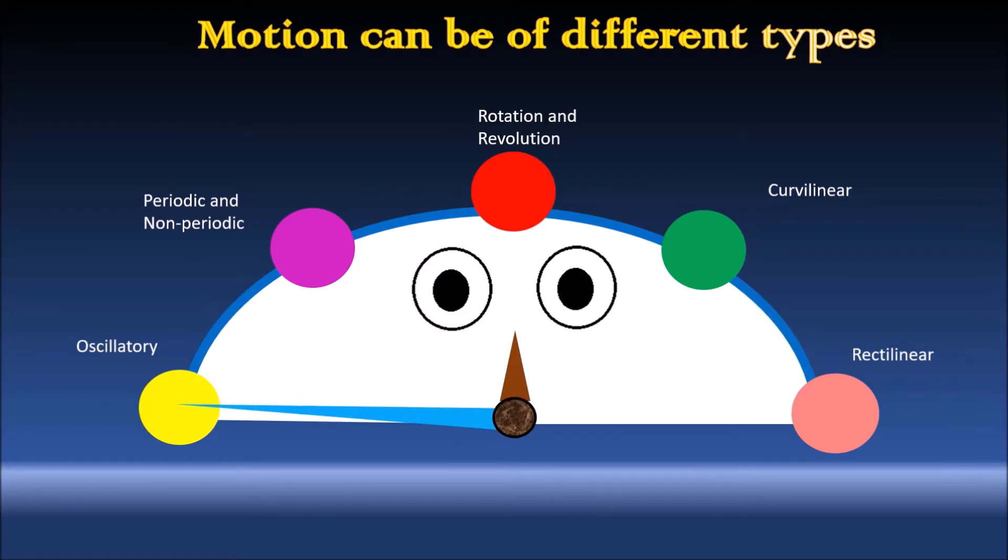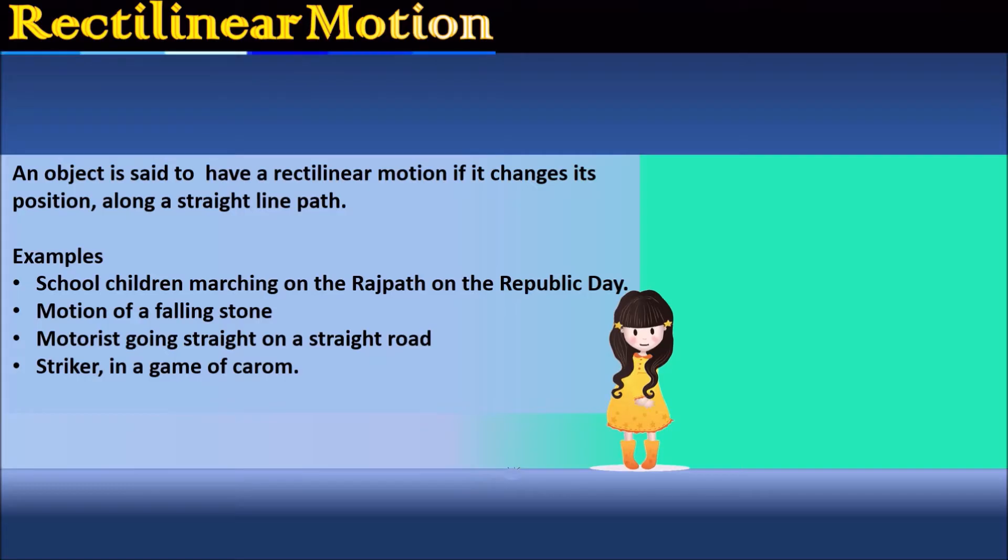I begin with rectilinear motion. An object is said to have a rectilinear motion if the changes in its position are all along a straight line path.